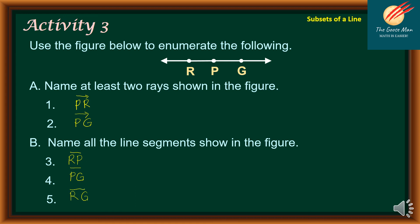By the way, line segment RP is the same as line segment PR. They have the same measurement, as well as line segment PG is the same as line segment GP. They are actually the same, as well as line segment GR is the same as line segment RG.